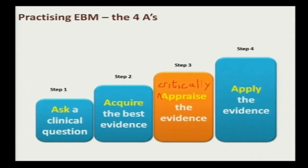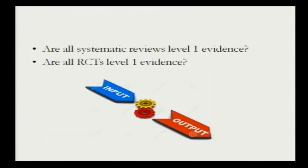The third and most important step that distinguishes a systematic review from a narrative review is critical appraisal of the literature. This is important not only for writing a systematic review but also for reading any research article — whenever you read a research article you should be able to critically appraise it to determine whether you can use that information or not.